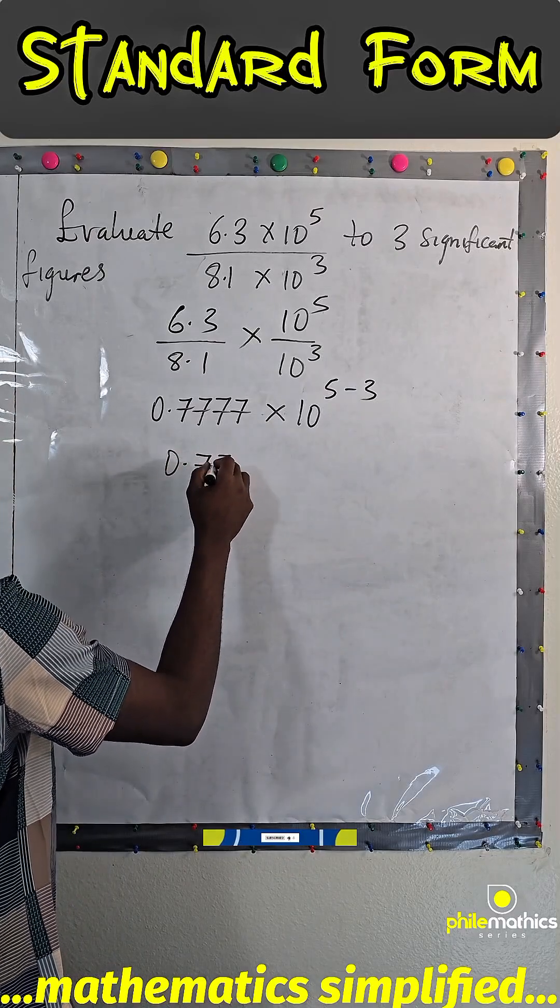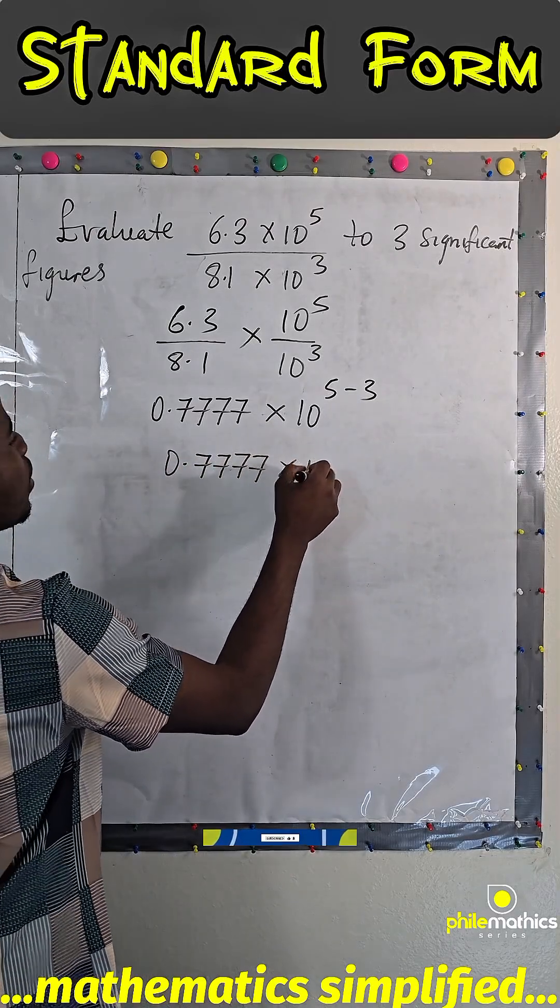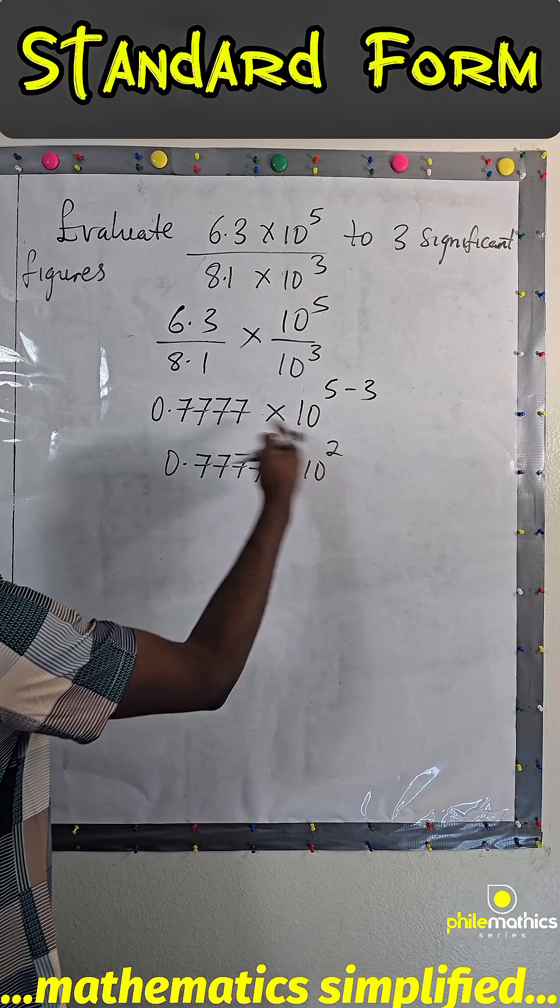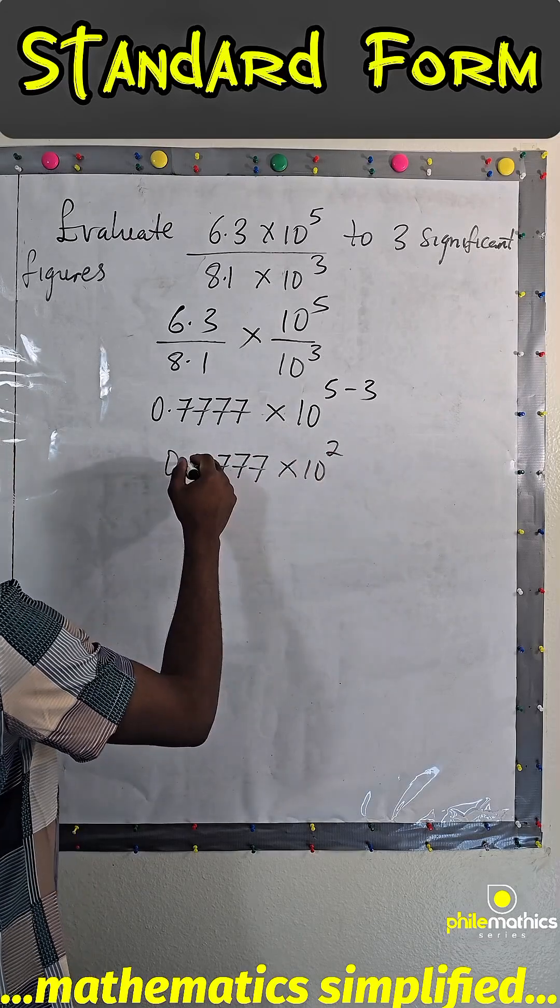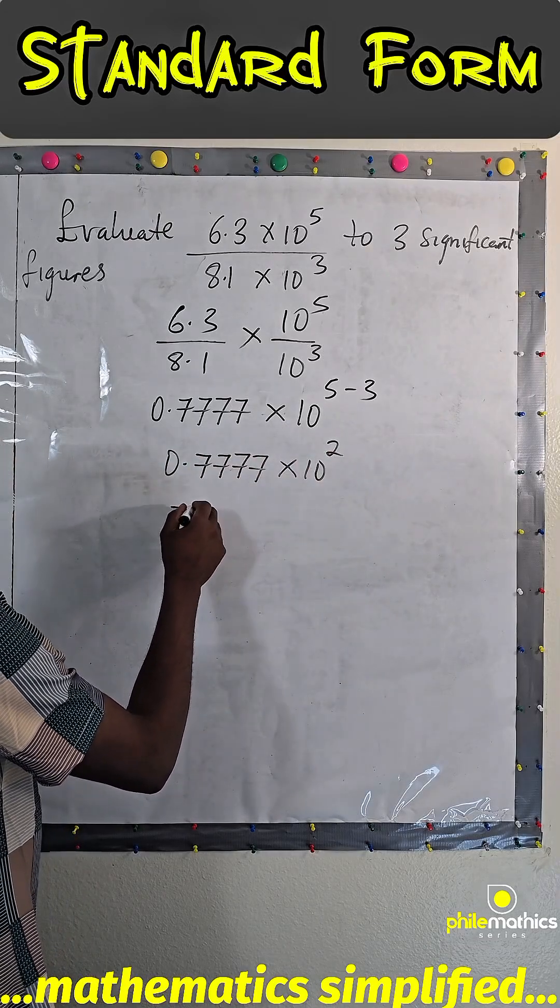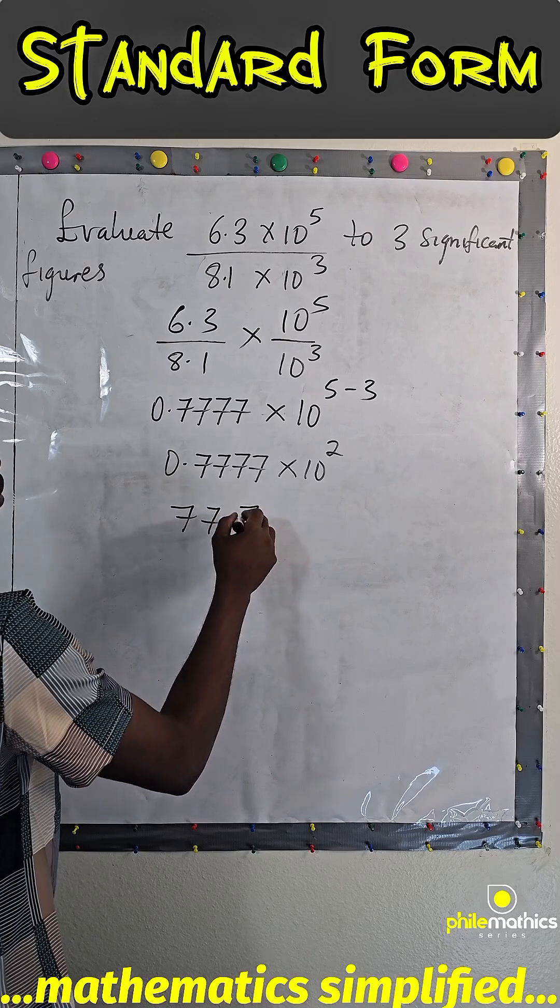This is 0.7777 times 10 to the power of 2. So 10 to the power of 2, we have to move the decimal point 2 places forward to have 77.77.